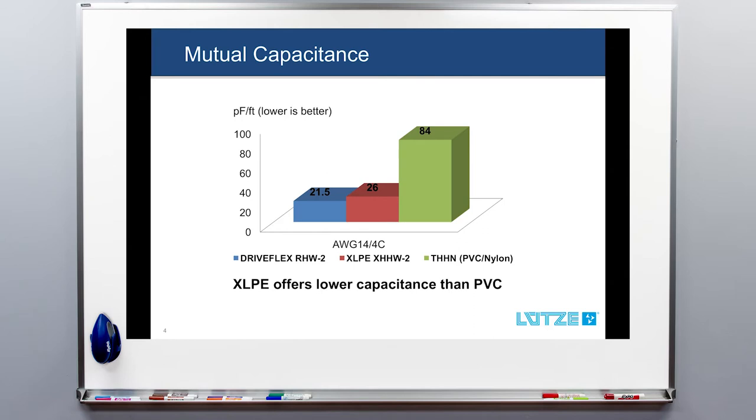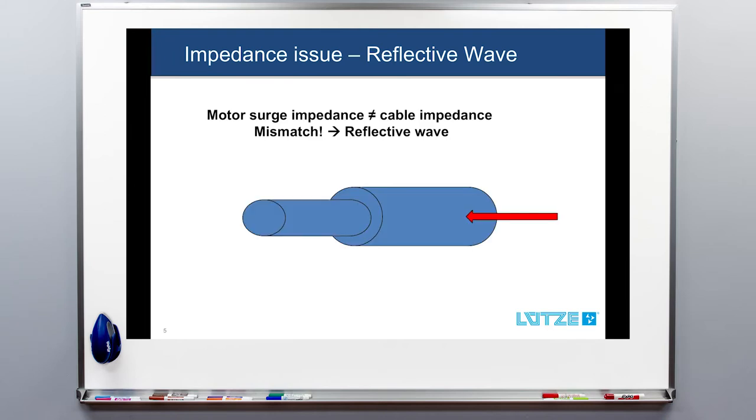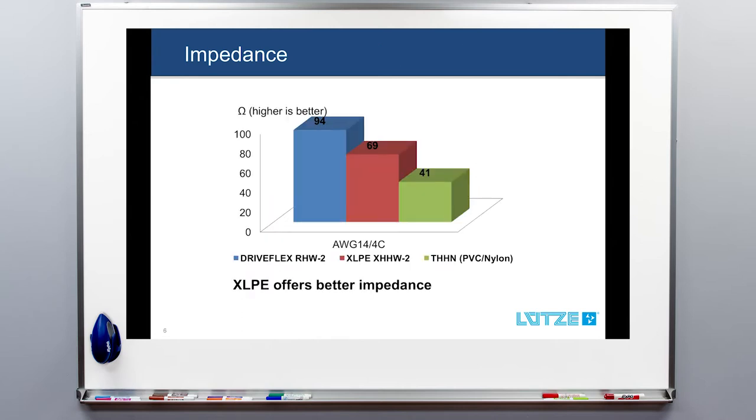The second problem is the cable impedance and the motor impedance being in a mismatch. In a sense, this is like a bottleneck causing a splashback. The impedance mismatch is partially responsible for what is called the reflective wave phenomenon, that in turn creates a lot of electrical problems and can lead to common mode noise and motor failures.